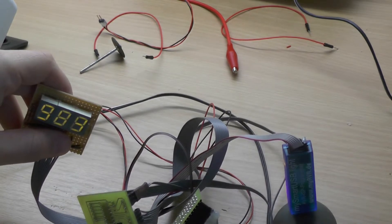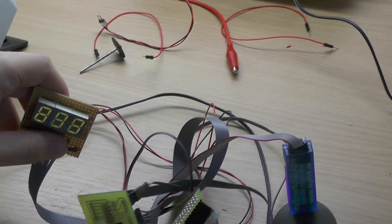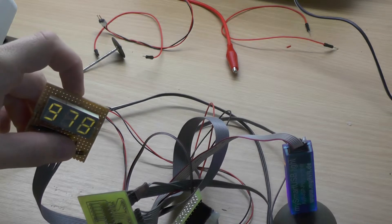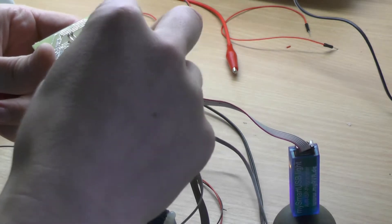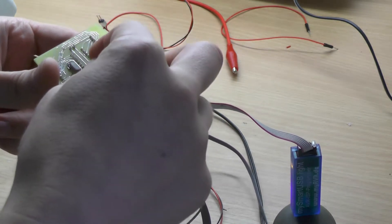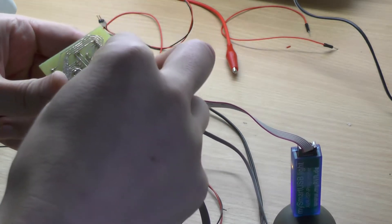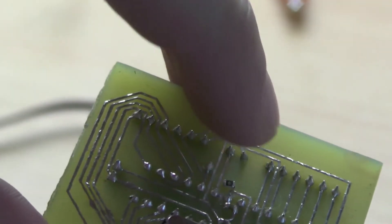Thankfully it worked afterwards and didn't destroy the microcontroller. Since the disconnected trace was chained to the second power connector, I had to bypass it. I finally had an application for one of the zero ohm resistors which I had recycled earlier.